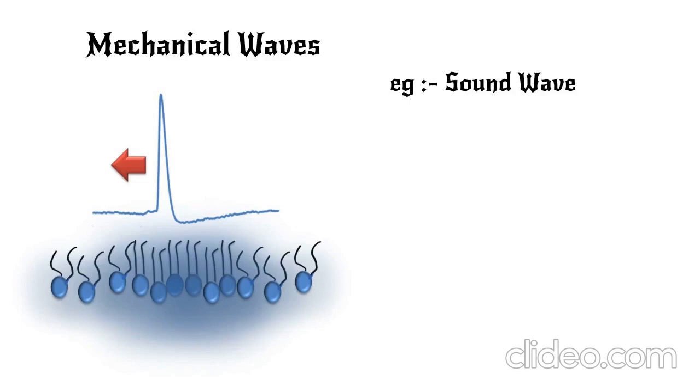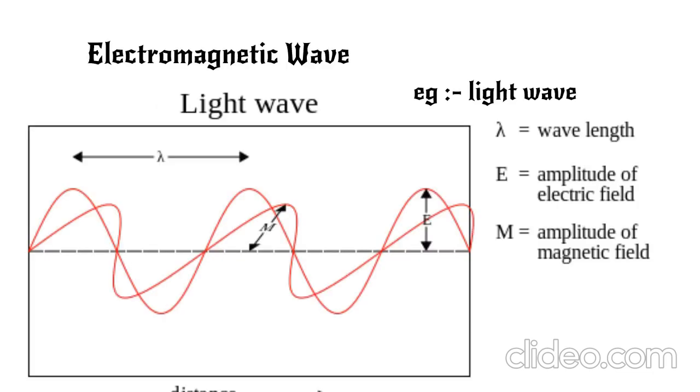This says that every moving particle has an associated matter wave with it, with a wavelength of lambda. But what is a matter wave? Obviously, we have known two kinds of waves: mechanical waves like sound waves that travel through a medium, and electromagnetic waves which travel through medium as well as vacuum, that is, do not need a medium. But matter wave is different from both.